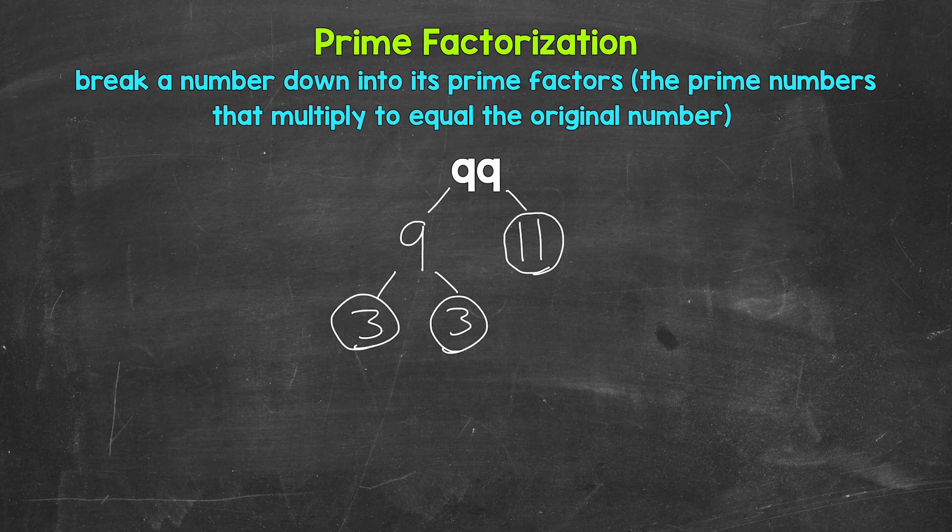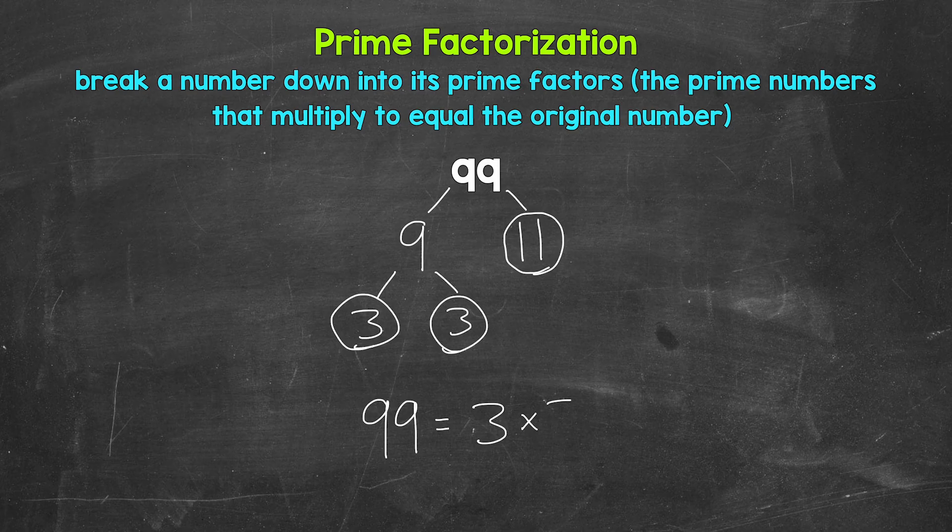We have all prime numbers. So let's write this out as 99 equals. And then we can write our prime factors in order here from least to greatest. And we are multiplying them. So 3 times 3 times 11.